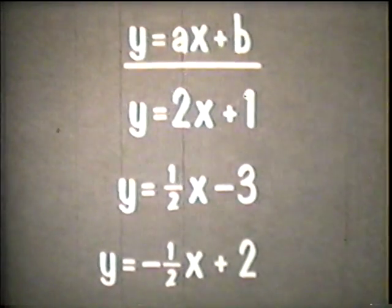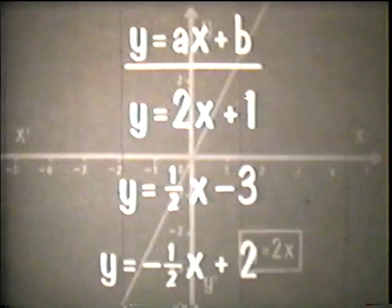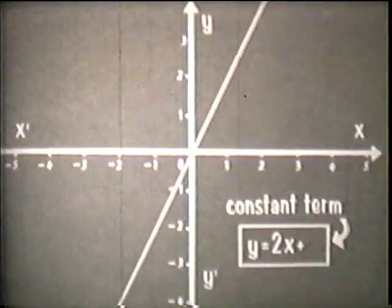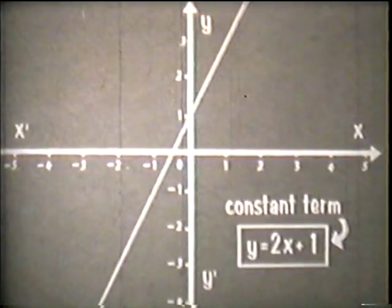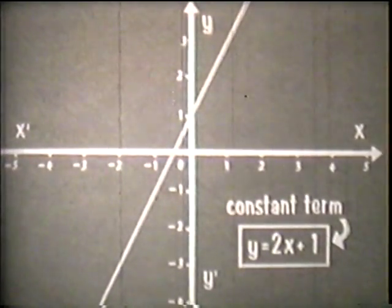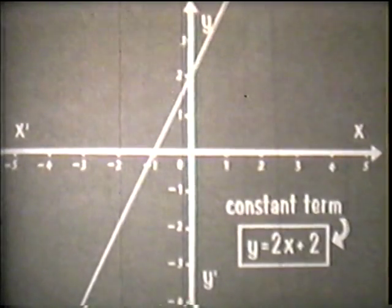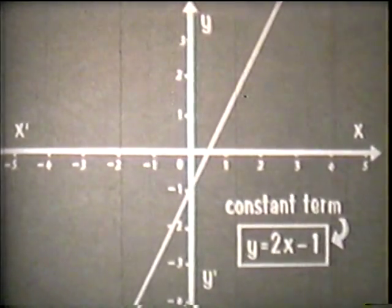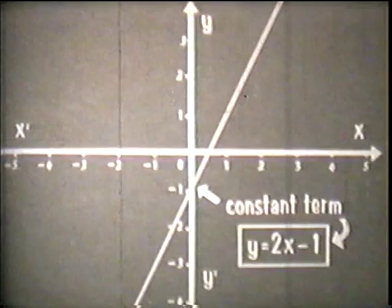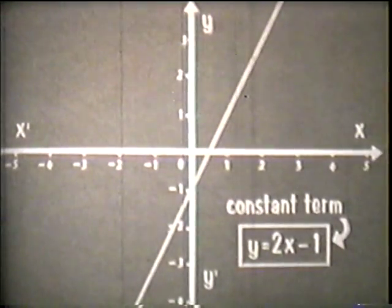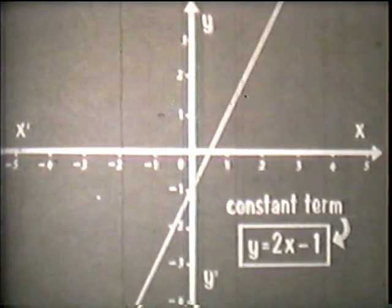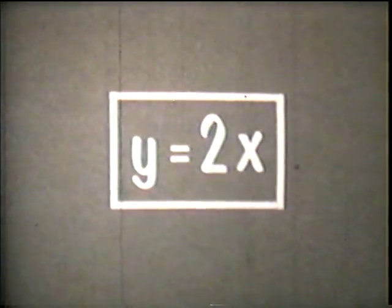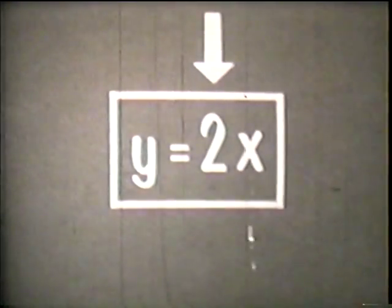To see the effect of constants on linear equations written in this general form, let's look at the graph of our equation y equals 2x. Adding a constant term such as 1 to the equation, we see that the graph intersects the y-axis at 1. Adding 2 to the equation, the graph intersects the y-axis at 2. Adding negative 1, the graph intersects at negative 1. We see that the value of a constant term in a linear equation determines the intersection of its graph with the y-axis. The graph also depends on the coefficient of x, which is constant in any given equation.